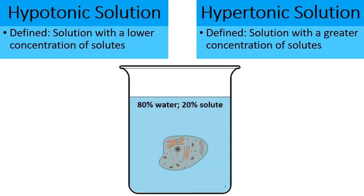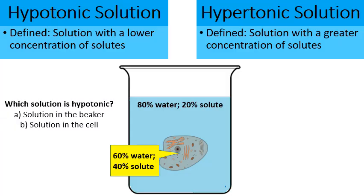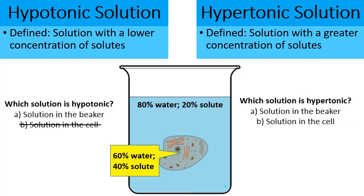The solution in the beaker is 80% water and 20% solute, while the solution in the cell is 60% water and 40% solute. Which solution is hypotonic? By definition, hypotonic is one with a lower concentration of solutes — that's the solution in the beaker, because 20% solute is lower than 40%. Hypertonic is one with a greater concentration of solutes — that's the solution in the cell, where 40% solute is greater than 20%.